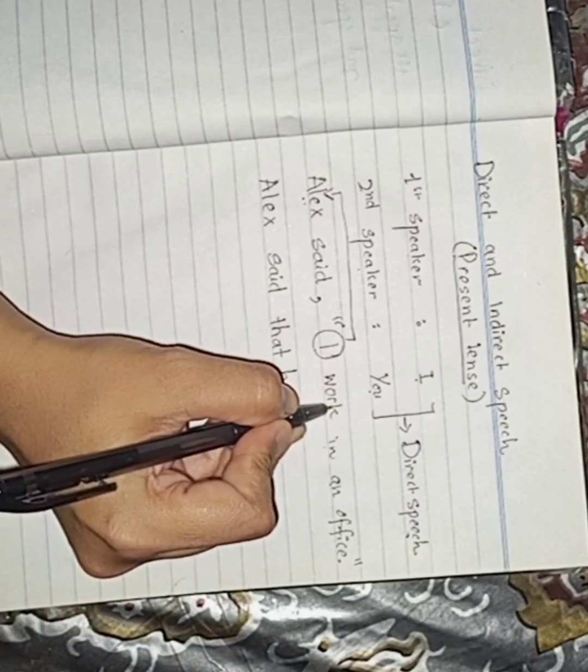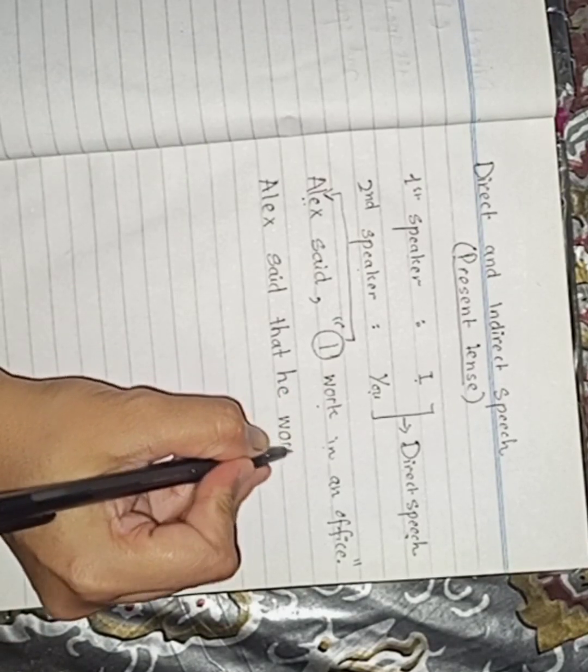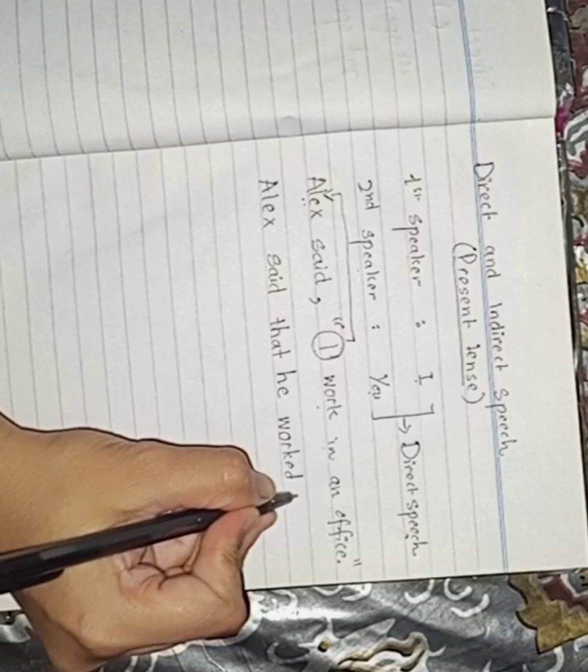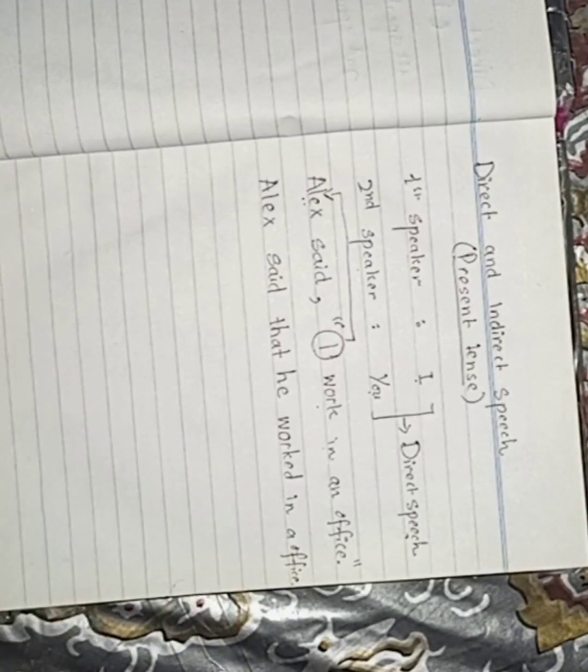Now there is a rule. If there is a sentence of present tense, then we'll change this present tense into past tense in indirect speech. He worked in an office. Full stop. That's it.